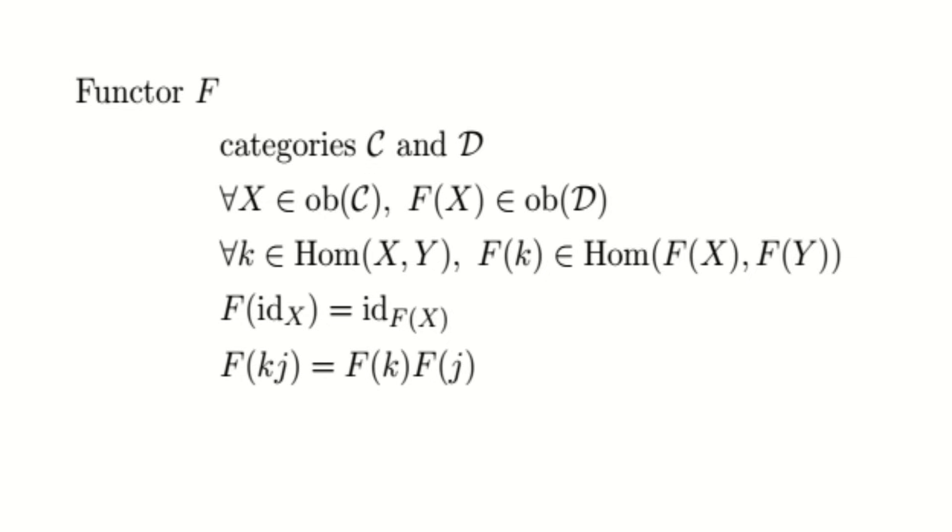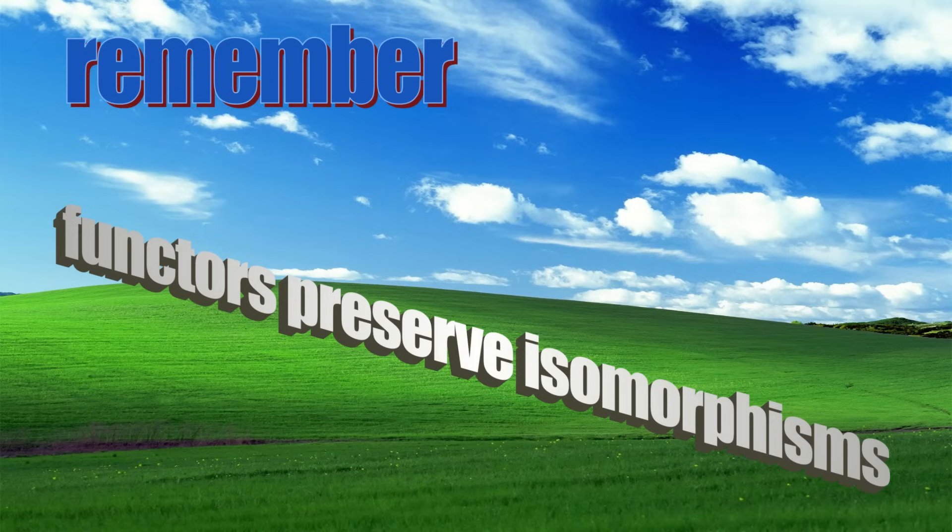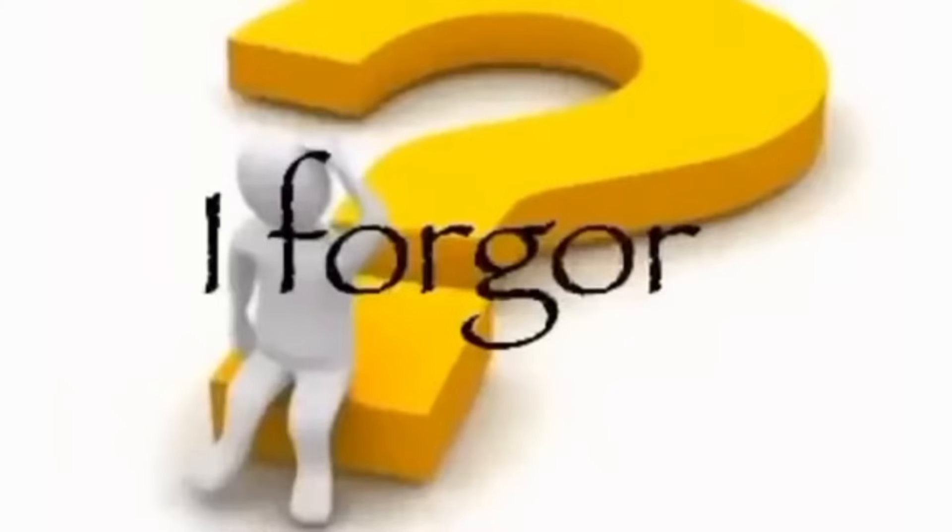These last two rules are important because it allows us to show that if two objects are isomorphic in one category, they are isomorphic when the functor is applied. In other words, functors preserve isomorphisms. An example of a functor is the classical forgetful functor on topological spaces. This maps each topological space to its underlying set without its topology, and maps each continuous function to its corresponding set function. So, why is this all relevant?